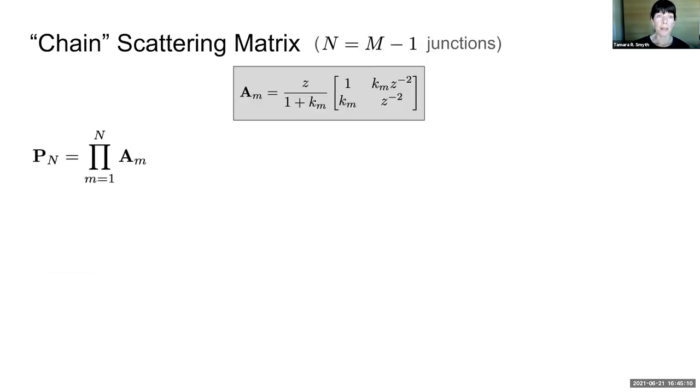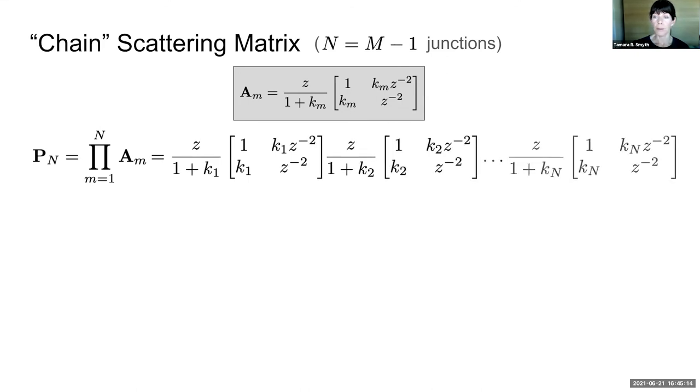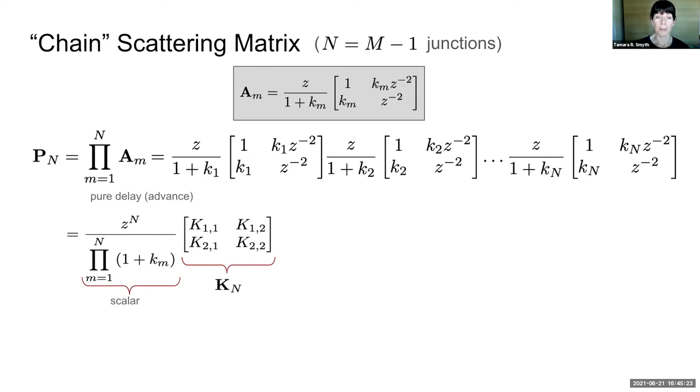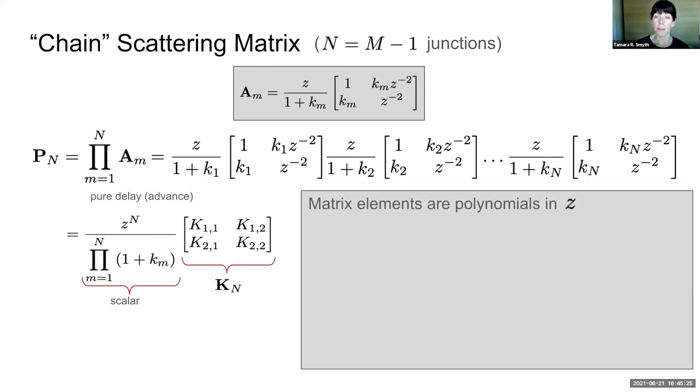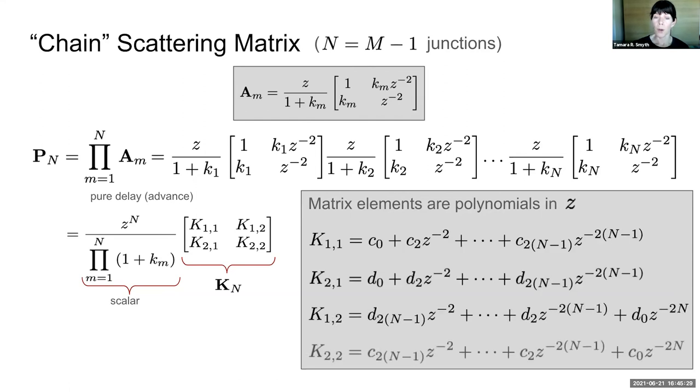The chain scattering matrix, again the repeated product of the individual scattering matrices, then produces a new matrix, K sub n, the elements of which are polynomials in Z. The coefficients of those polynomials are in the right column in the reverse order of those in the left column.